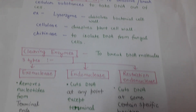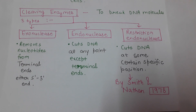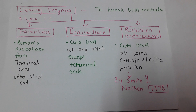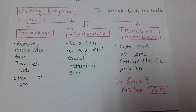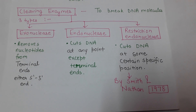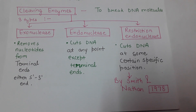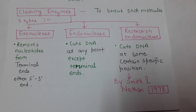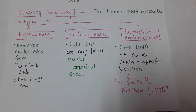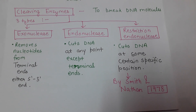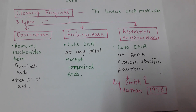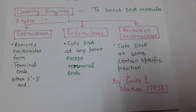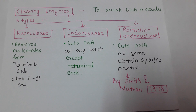Another category of enzymes used in recombinant DNA formation is cleaving enzymes, which break DNA molecules. There are three types: exonucleases remove nucleotides from the terminal ends of DNA, either from the 5' end or the 3' end — they never cleave the DNA in the central portion. Endonucleases cut DNA from random points except the terminal ends. Restriction endonucleases cut DNA at specific positions and are commonly used in recombinant DNA formation.